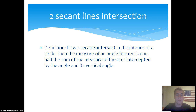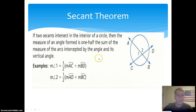Here's an example of that secant theorem. The measure of angle one equals one half the sum of the measure of arc AC plus the measure of arc DB. The measure of angle two is equal to the measure of arc AD plus the measure of arc BC, divided by two.